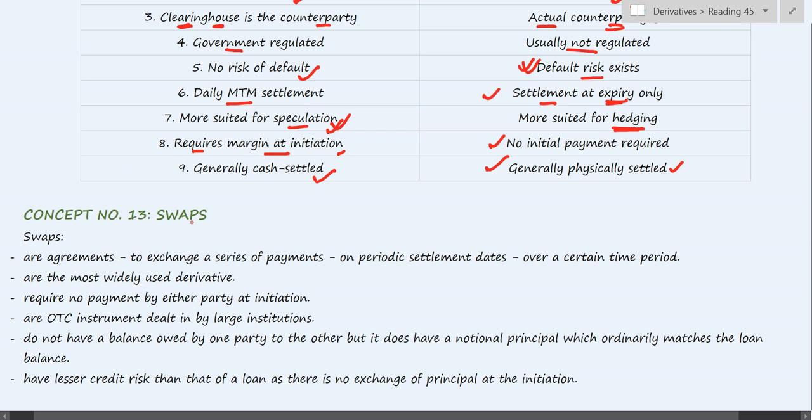Concept number 13: Swaps. Swaps are forward commitments and over-the-counter instruments which are the most widely used derivatives in the whole world. This might be surprising because we don't tend to hear about swaps in our day-to-day life - retail investors focus more on options, but it is swaps where the whole world is putting their money. So let us understand what swaps are and why they're so important.